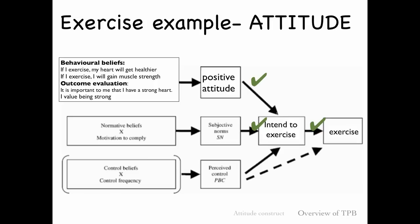Another example: I might believe that if I exercise, I'm going to gain muscle strength. And my outcome evaluation — how much I value that outcome — is high because I want to be a strong grandma when I'm 80. Those things would lead me to form a positive attitude towards resistance training.